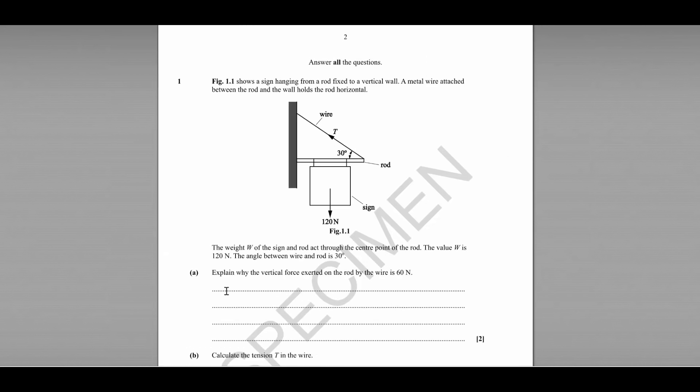Part A asks us to explain why the vertical force exerted on the rod by the wire is 60 newtons. So it's talking about this force here, the vertical component of T, which we'll later see as T sine 30 degrees.